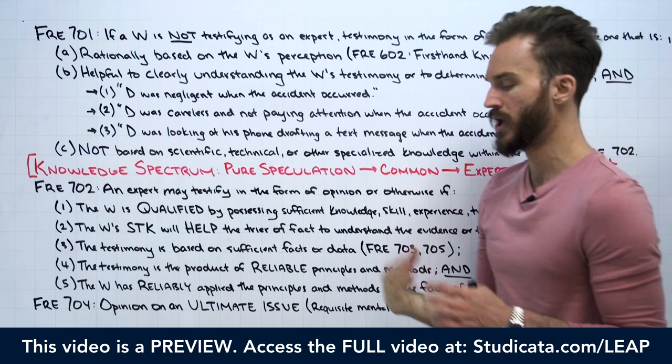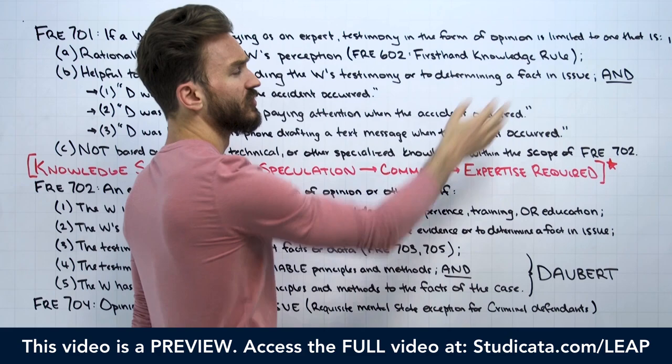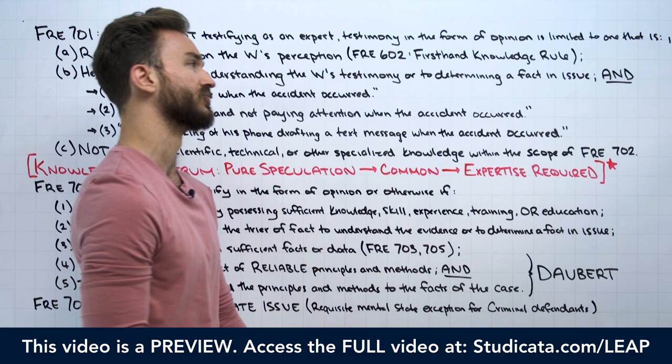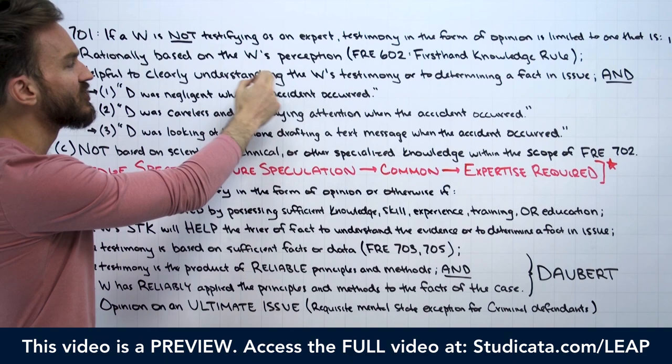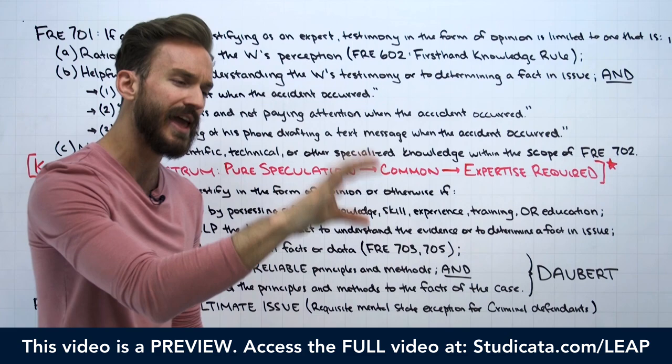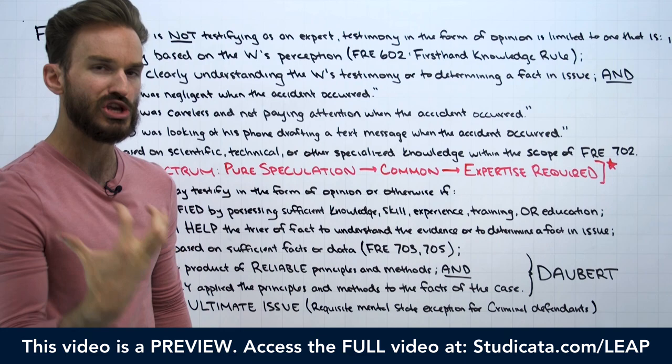We briefly touched on this when we talked about Rule 602, the first-hand knowledge rule. If a lay witness is going to give an opinion based on common knowledge — like how fast a car was traveling — it has to be based on the witness's perception, referring to the senses of a human being: vision, hearing, smell, taste, and feeling. It has to be based on these primary sensory inputs.